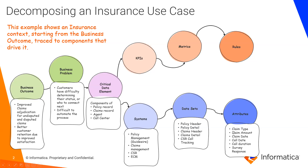Getting down to the lower-level attributes: claim type — this may be a code or a set of controlled values — claim amount for the repairs on your car and other cars. When the incident happened, when you first contacted, maybe subsequent calls to the call center and how long you were on that call. Then maybe after the fact, a survey response asking how did we do. This would feed back to better customer retention, so you want to capture this information all the way along.